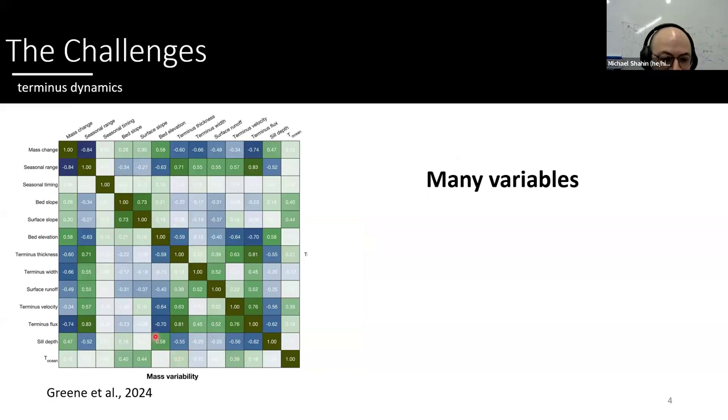They look at every variable they could get data a hold of. For example, on this confusion matrix, they have 13 variables. And they're trying to correlate seasonality, or what causes these seasonal swings in terminus position and ice velocity. And what the authors come up with is that the strongest correlation is that seasonal range and mass change have about an R-value of 8.4, which compared to everything else, isn't really that great. But it doesn't really show us a causal relationship. Why is mass change because of the seasonality? Or does seasonality change this mass loss signal?